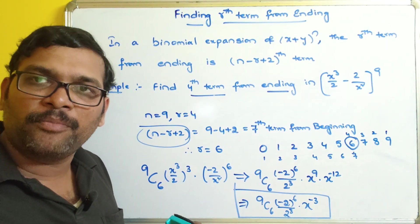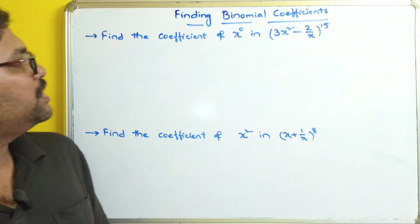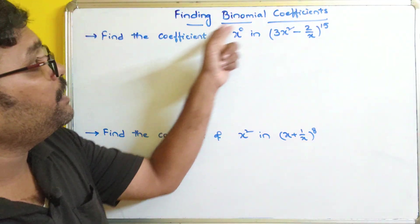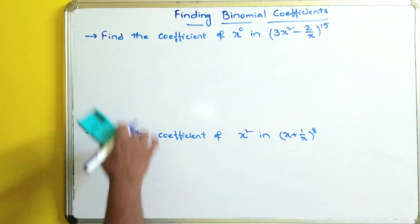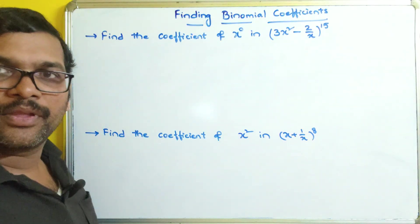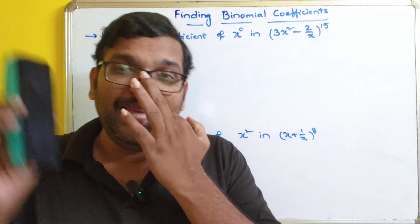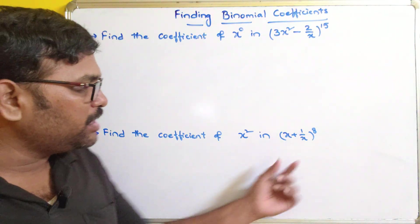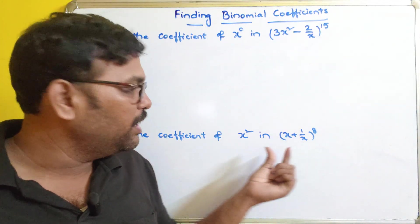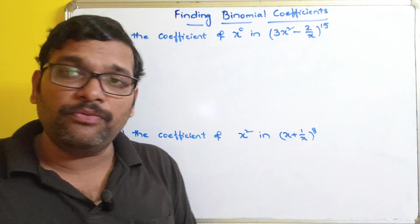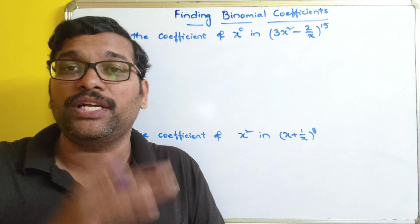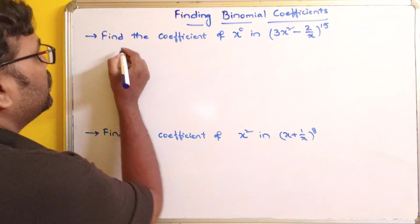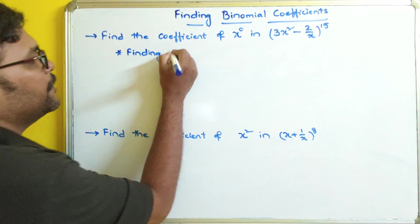Now, finding binomial coefficients. Let us check these two things. Previously we have found binomial terms; now we have to find the binomial coefficients. Let us solve these two examples. The first one: find the coefficient of x^0. In this expansion we will have powers of x, and among all those terms we need to find the coefficient of x^0. The first step is finding the general term, which is the r plus 1th term.